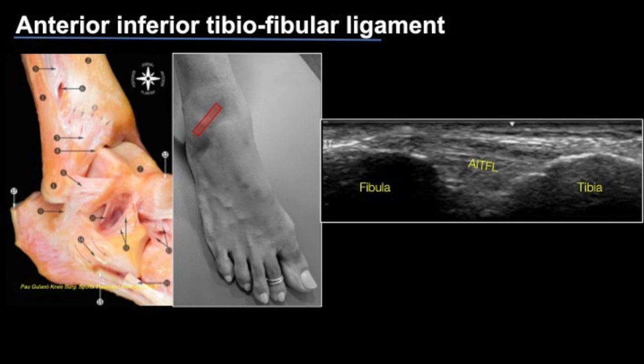The anterior inferior tibiofibular ligament is a syndesmotic ligament spanning the tibia and fibula. It is important to look at the orientation of the fibers of the AITFL so that when we scan it, we identify the fibula and the tibia and place the probe obliquely in the direction of the fibers. This allows us to see the AITFL as an echogenic structure with multiple linear striations.